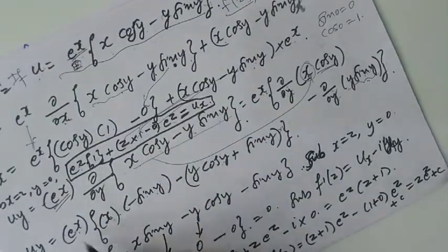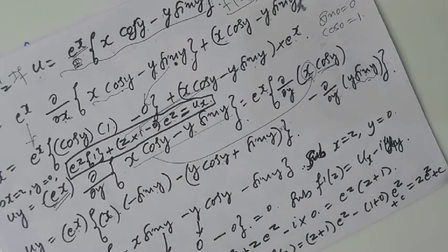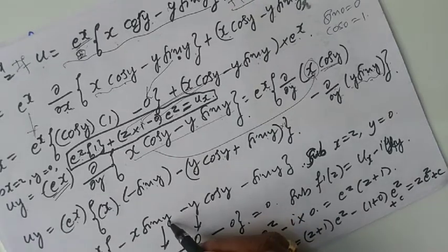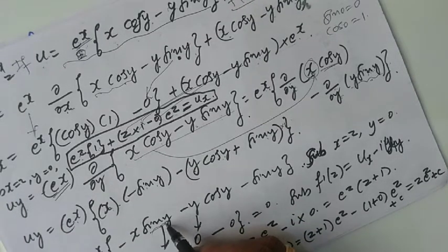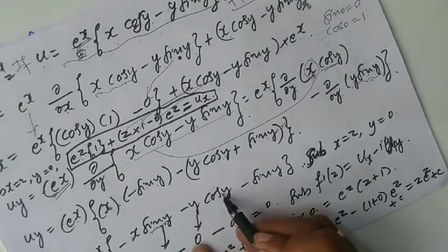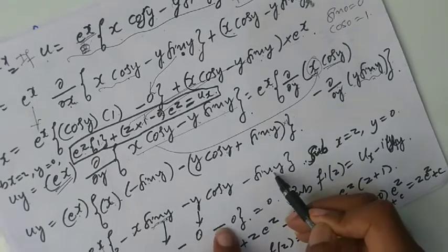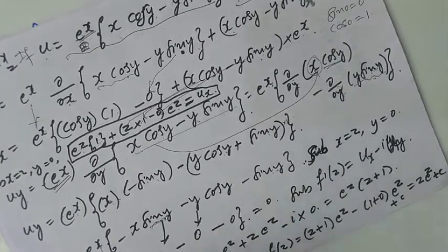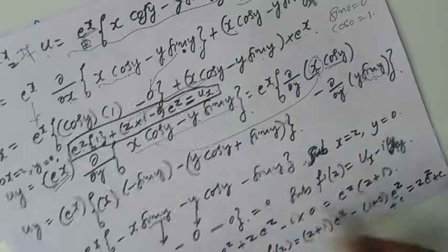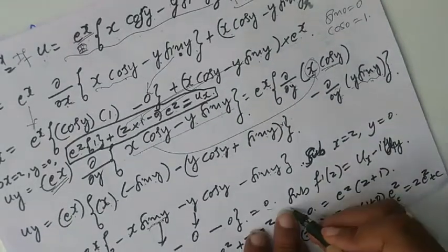Now substitute x equal to z, y equal to 0 here also. e to the power x becomes e to the power z. Putting y equal to 0: sin 0 equals 0, so x times sin 0 is 0; 0 times cos 0 is 0; and sin 0 is 0. Therefore uy evaluated at x=z, y=0 equals e to the power z into 0, which equals 0.